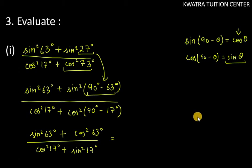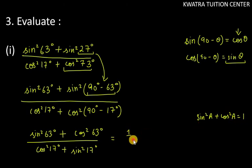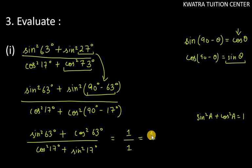Now here we will use the identity: sin square a plus cos square a equals 1. So the numerator is 1 and the denominator is 1. The total answer for the first part is 1. Let's move on to the second part.